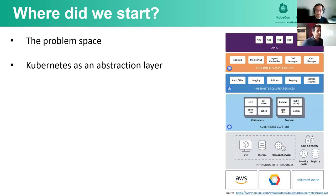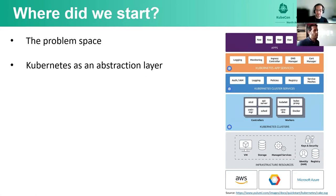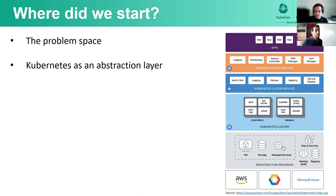With Kubernetes built as an extremely robust abstraction layer, we knew we would need to adjust our security perspective. Normally, as we are natively integrated to the Azure backbone, we tend to leverage any internal signal we could have to strengthen security offerings. But with Kubernetes being platform agnostic, we aligned accordingly and shifted our focus towards the Kubernetes layers.